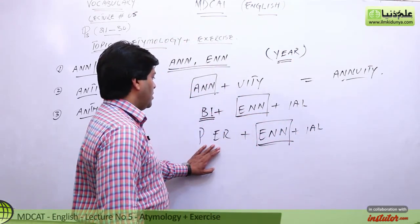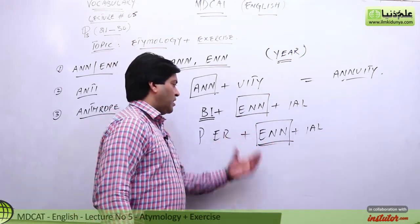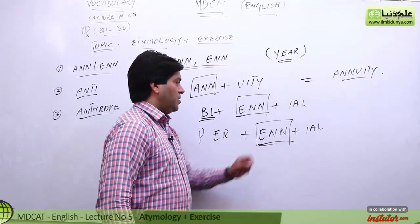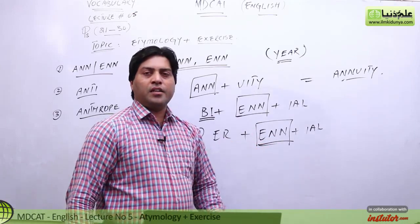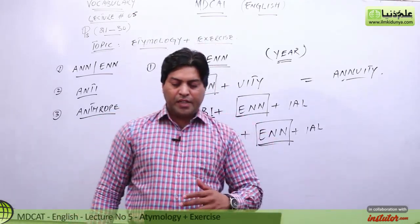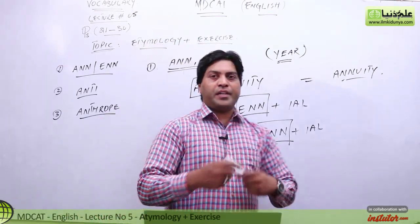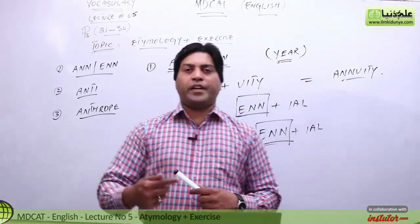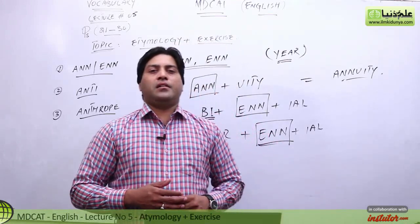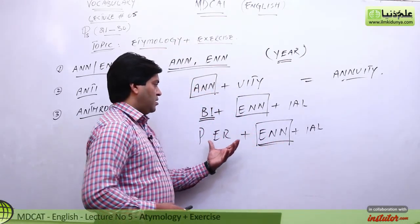Next word bachcho — perennial. Is mein bhi dekhiye, double-N use ho raha hai. Is lafz mein bhi aap dekhenge sense of year maujood hogi. Perennial means flowering yearly — flowering means nudunmaish, growth, prosperity. So perennial means prospering or flowering yearly.